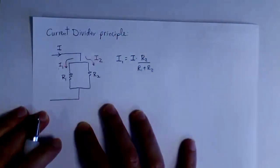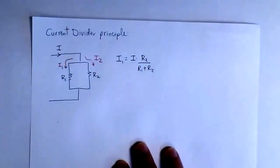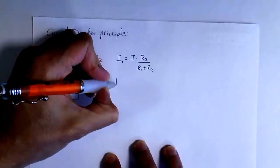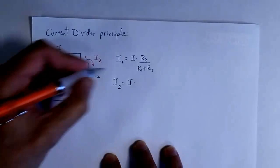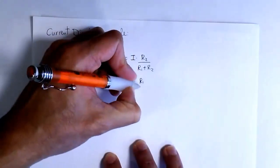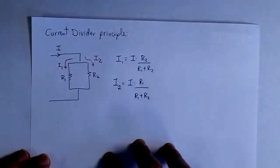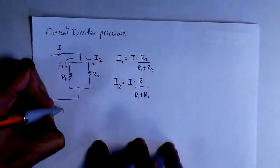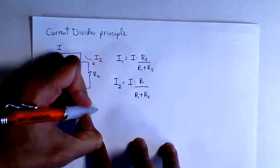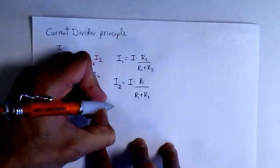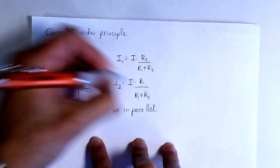Similarly, for I2, we take I multiplied by the other resistor R1, and then divide by R1 plus R2. If you want to look at the proof of this, you can check chapter 8 of your textbook. The condition is that R1 and R2 must be in parallel. If that's the case, then we can use the current divider principle; otherwise, it doesn't apply.